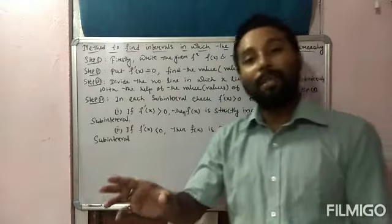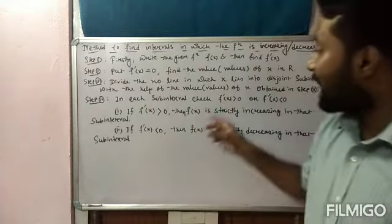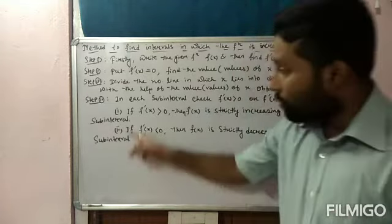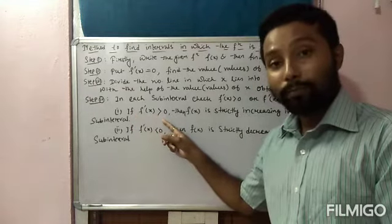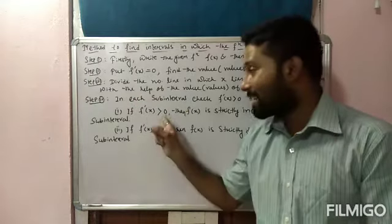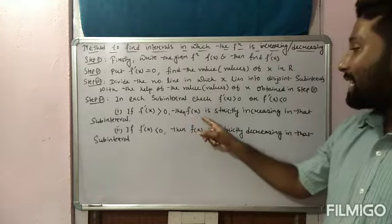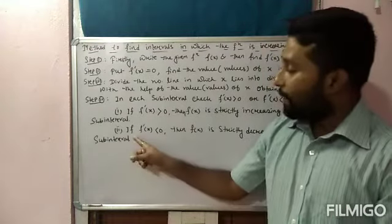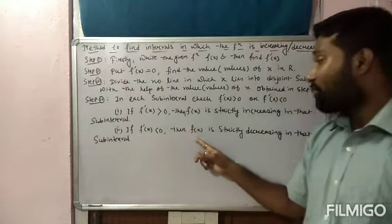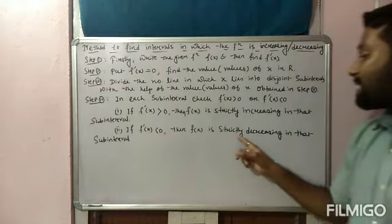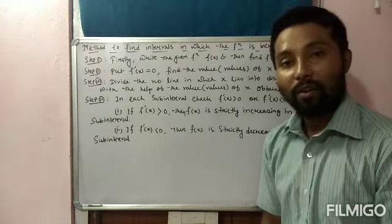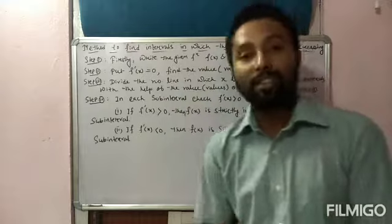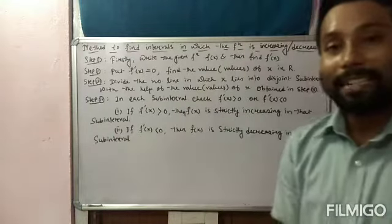Step 4: In each sub-interval obtained from Step 3, check the nature of f'(x) — that is, whether f'(x) is greater than 0 or less than 0. If f'(x) > 0 in a sub-interval, the function f(x) is strictly increasing in that sub-interval. These are the steps to follow to find the intervals in which the given function is increasing or decreasing.